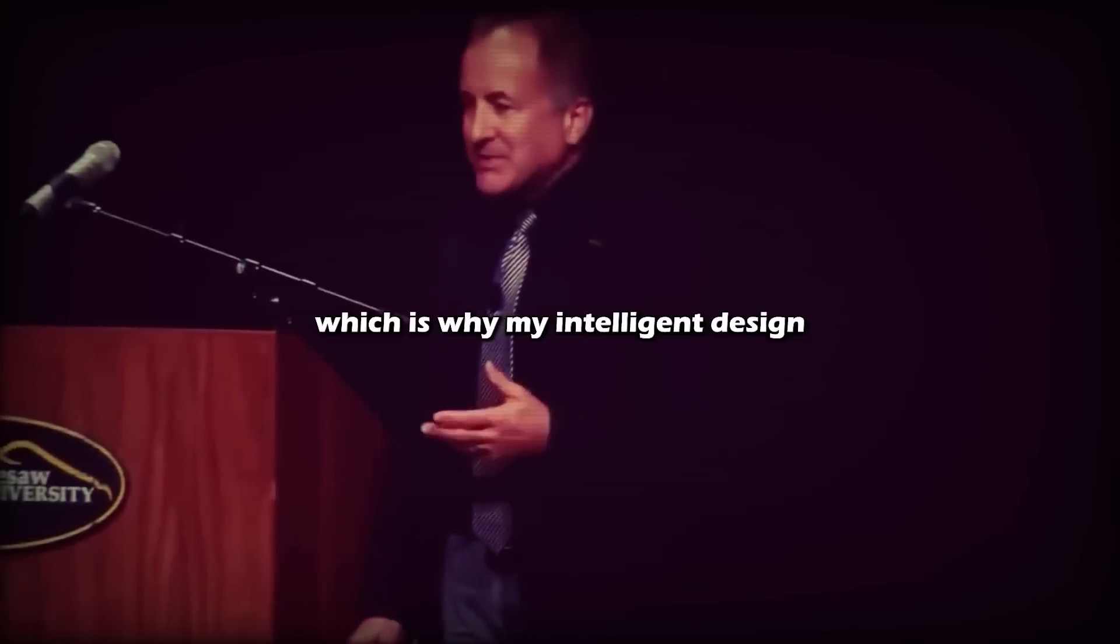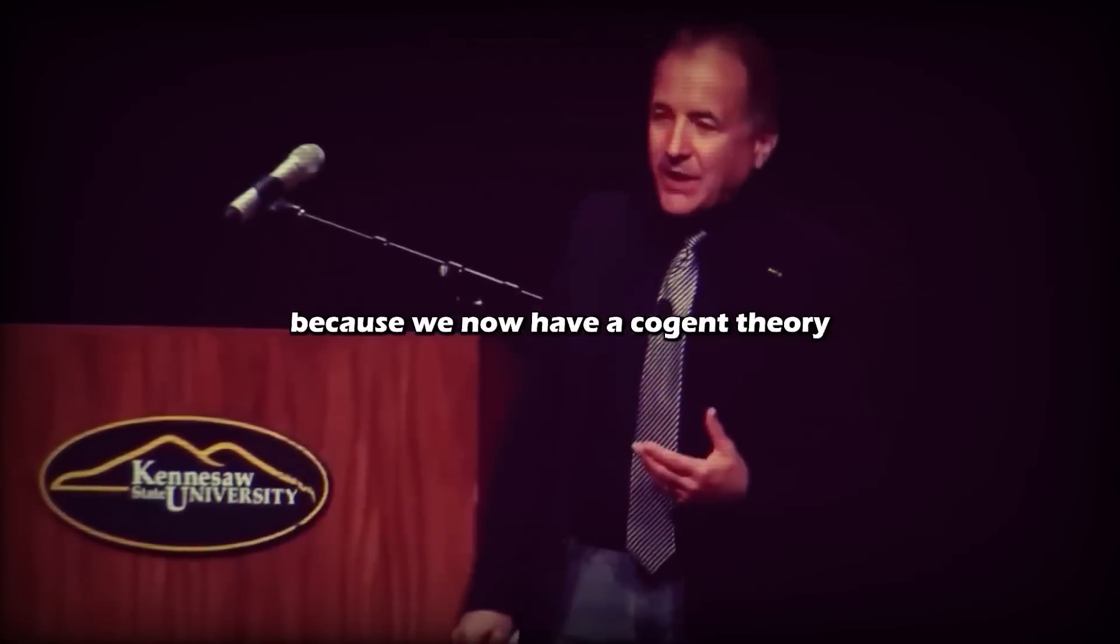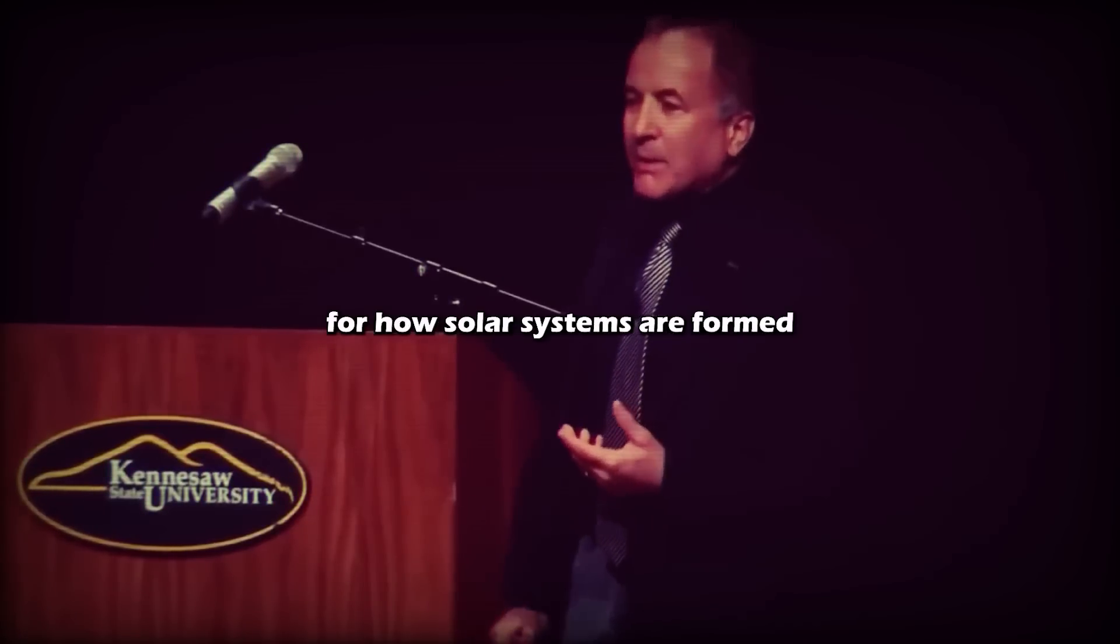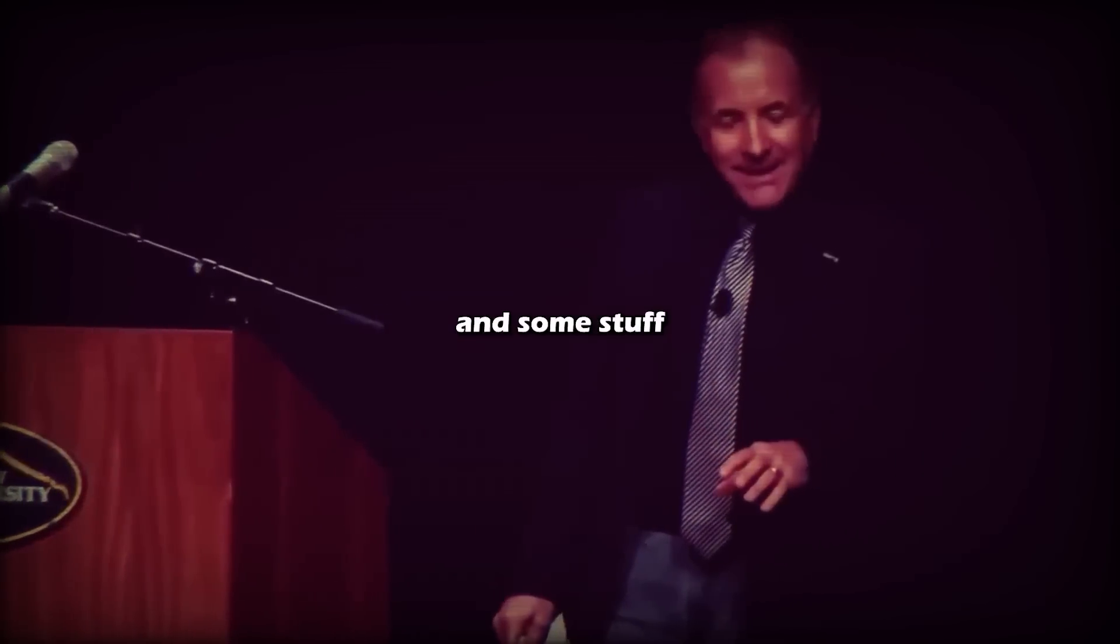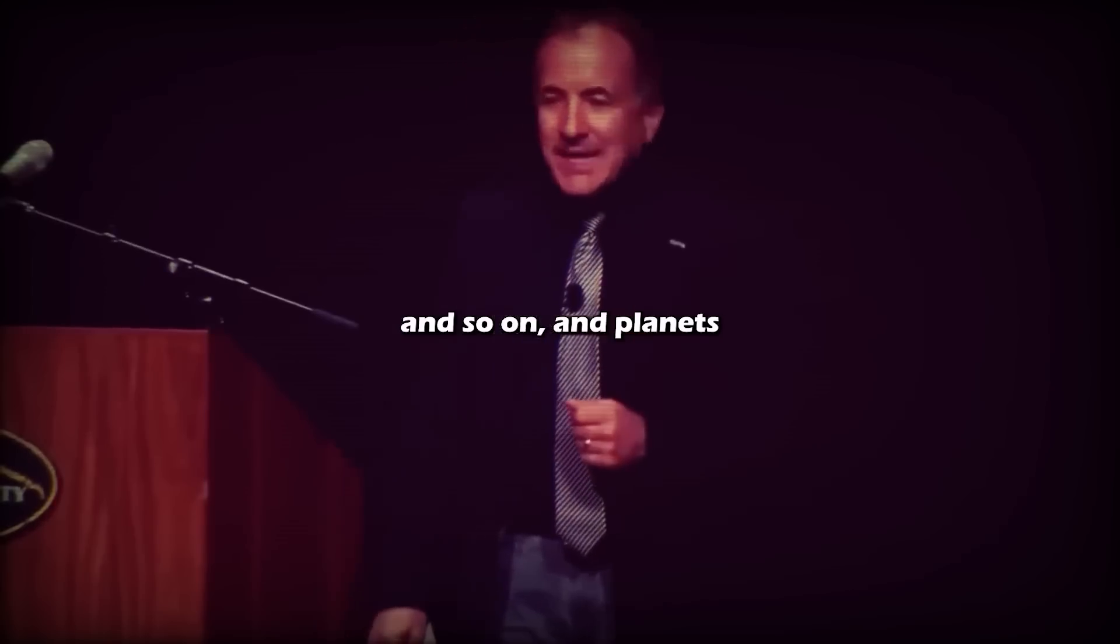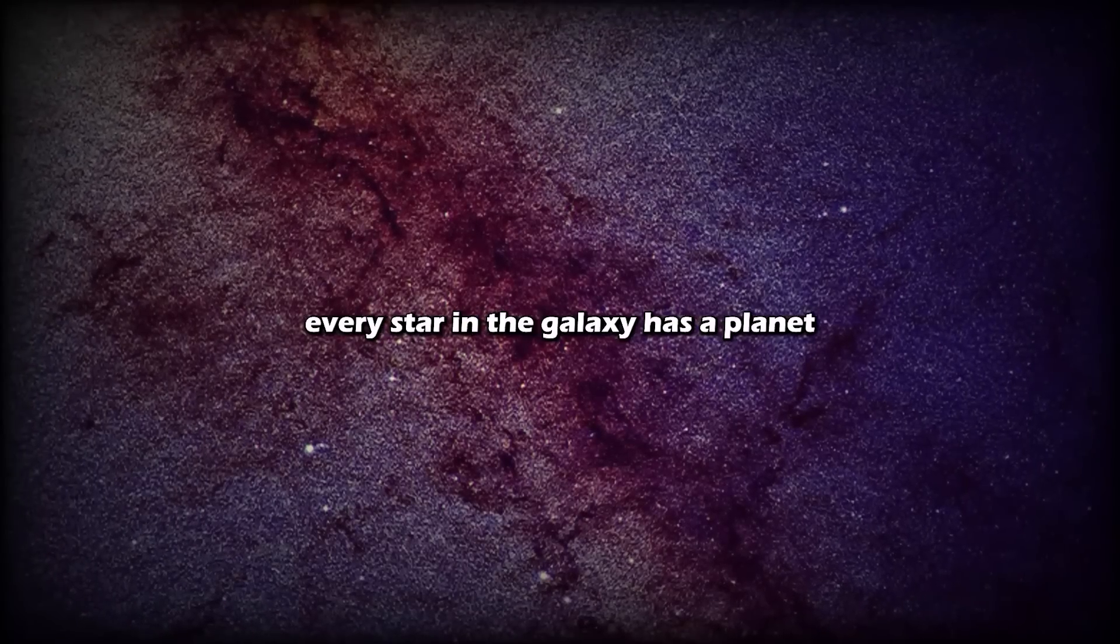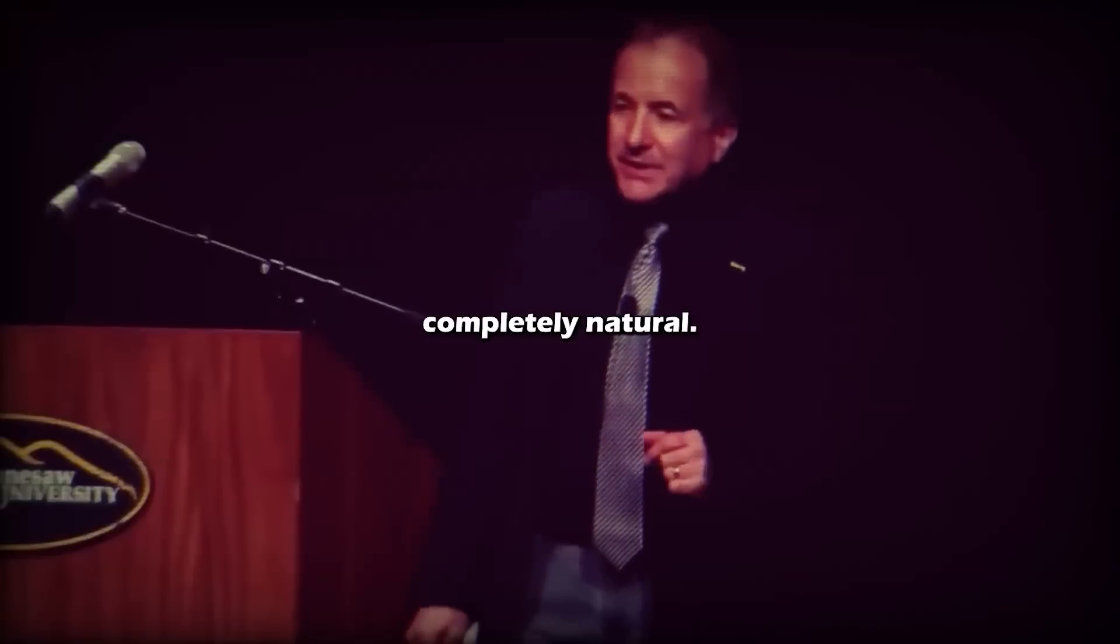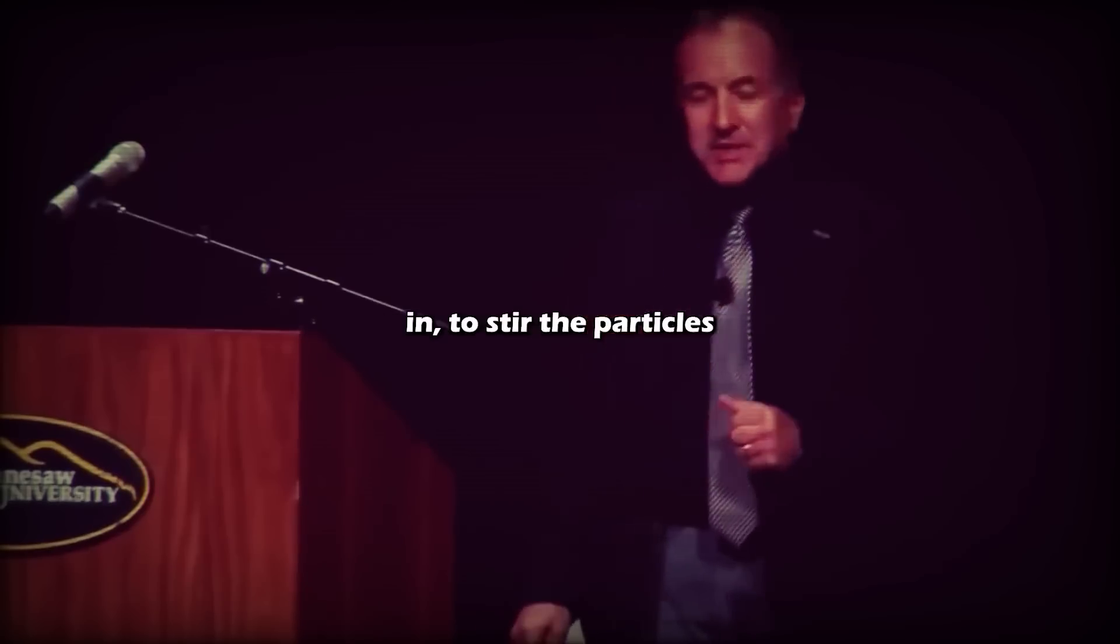But no one makes that argument anymore, which is why my intelligent design creationist friends don't use that quote, because we now have a cogent theory for how solar systems are formed. Naturally. All you need is gravity and some stuff in certain right configurations of how far apart they are, and planets naturally form. We now know that virtually every star in the galaxy has a planet. Completely natural. You don't have to have an intervening God to step in to stir the particles to make that happen.